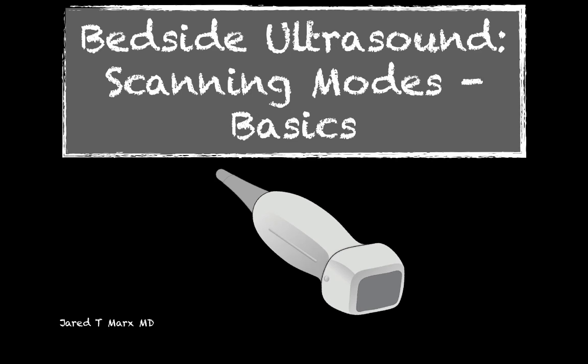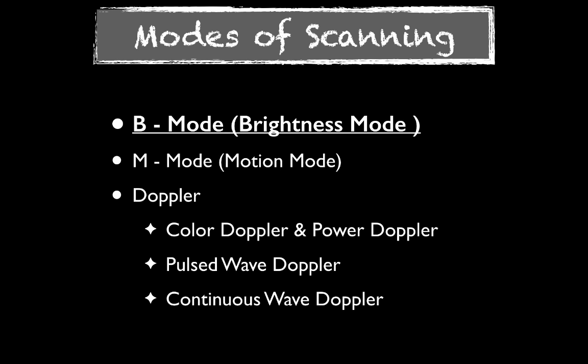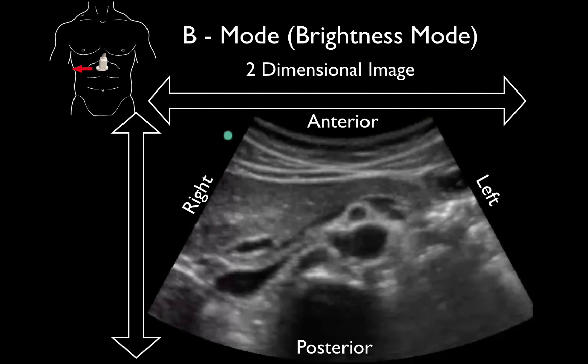Welcome to Bedside Ultrasound. We're going to talk about scanning modes today and essentially the basics of those. There are several scanning modes you can use when performing bedside ultrasound. We're going to focus on B-mode ultrasound, or brightness mode. This may also be referred to as 2D ultrasound, and hopefully by the end of the lecture you'll understand why it has these several names. This is the mode you'll typically scan in the emergency department, ICU, clinic, or wherever it may be — this is our basic scanning mode.